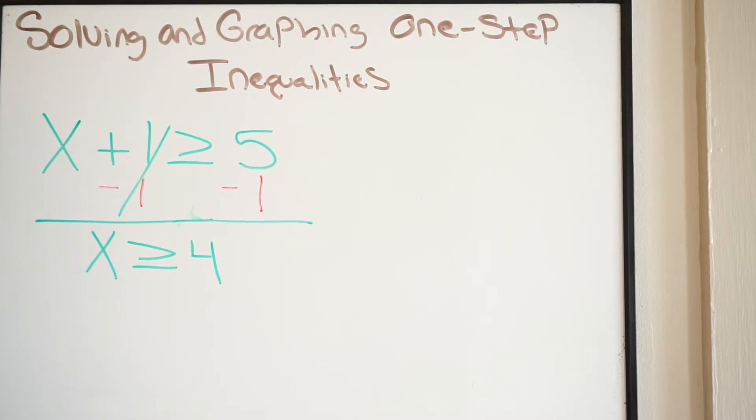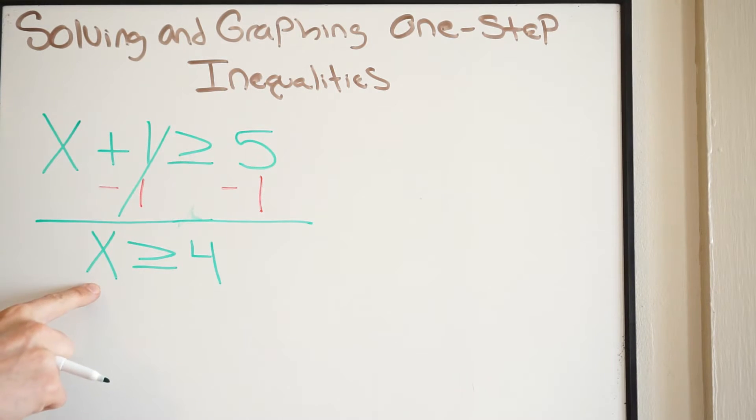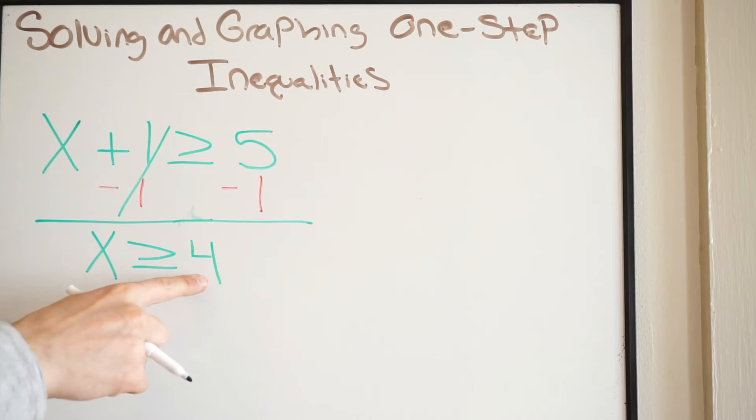When we do that, the ones will cancel and we get x. Bring down our inequality — greater than or equal to — and this gives us four. So there's our solved inequality. We want to make sure we're in the correct format, meaning we have our variable, inequality, and then number.